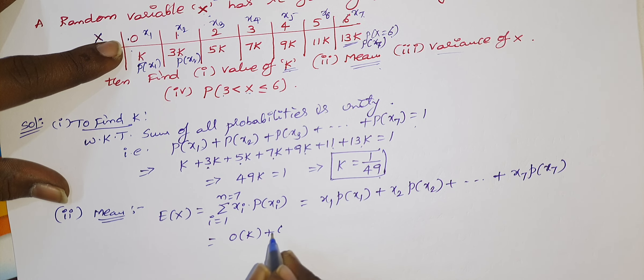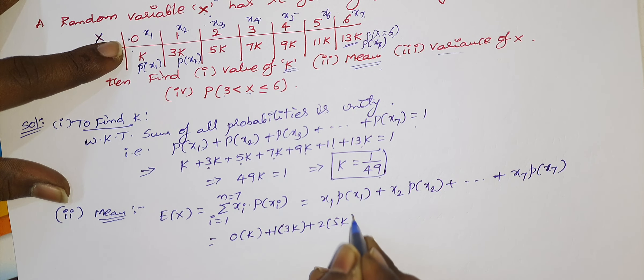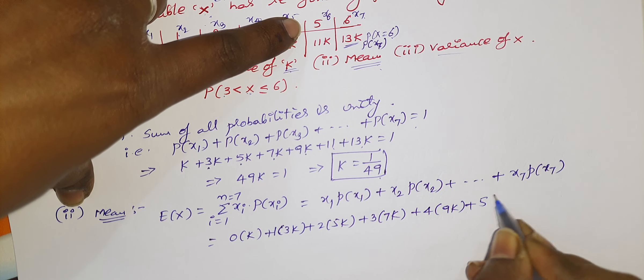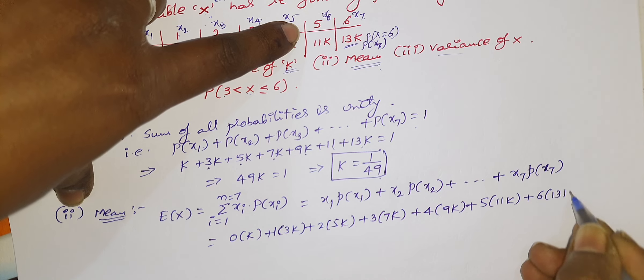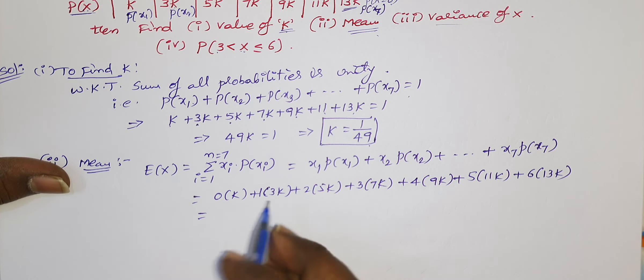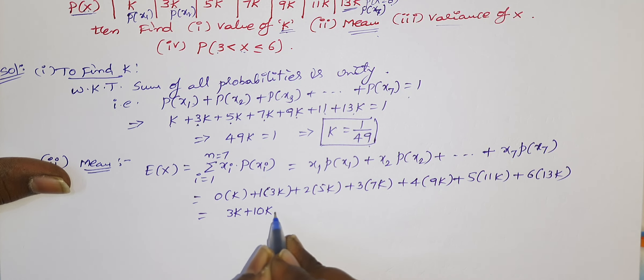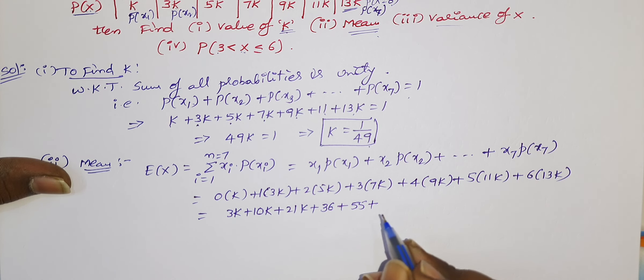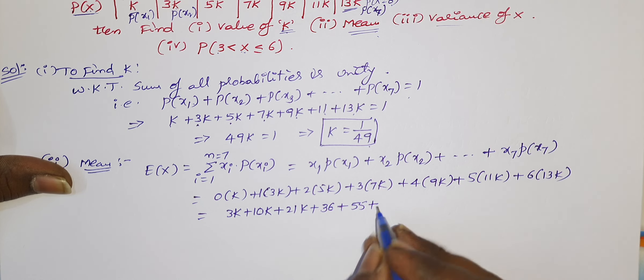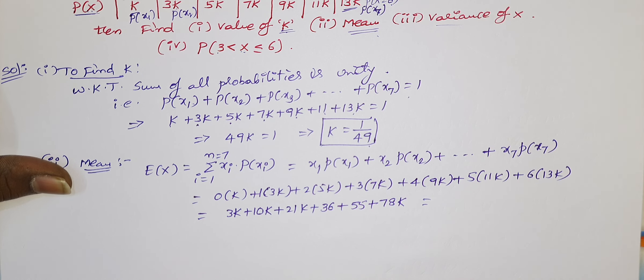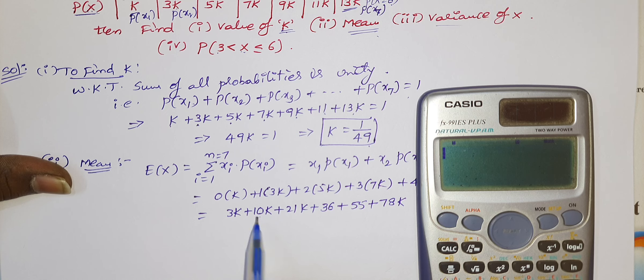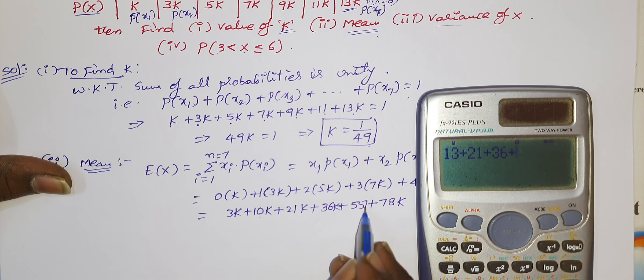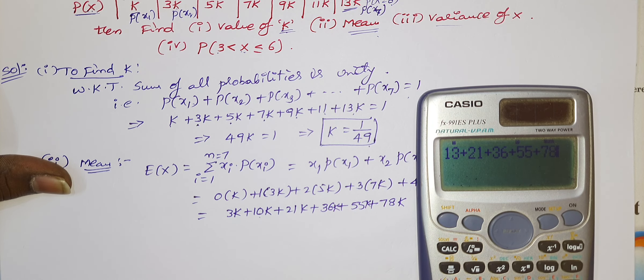From this table, you can multiply x value with respective probabilities and add them. So 0 into k, 1 into 3k, 2 into 5k, 3 into 7k, plus 4 into 9k, plus 5 into 11k, plus 6 into 13k. 0 into anything is 0. 1 into 3 is 3k, plus 2 times 5 is 10k, 3 times 7 is 21k, 4 times 9 is 36, and 5 times 11 is 55, and 6 times 13 is 78k.